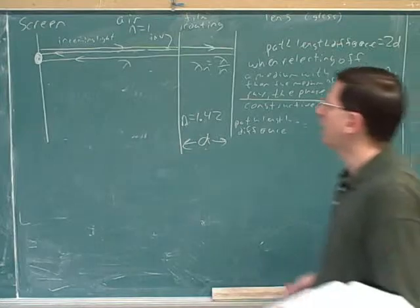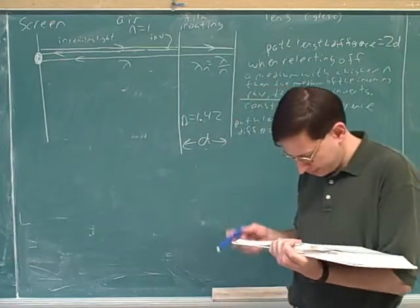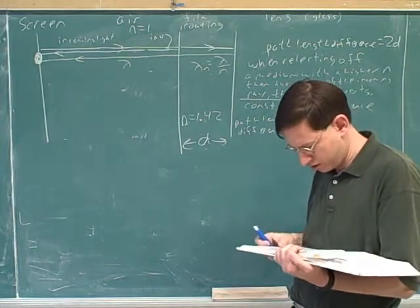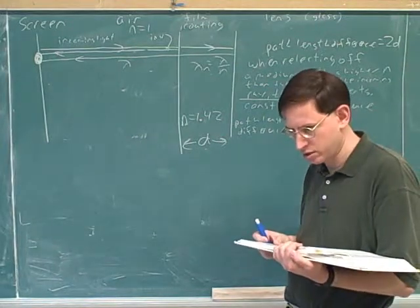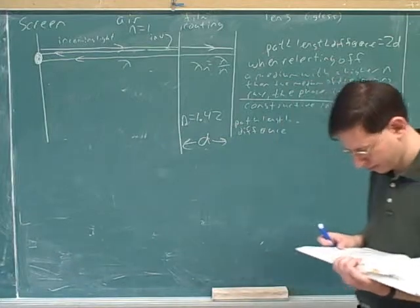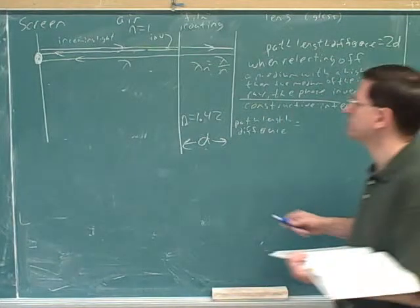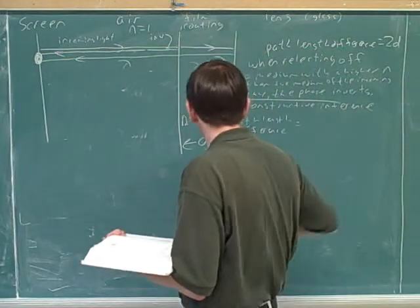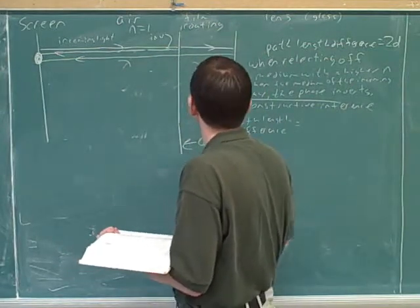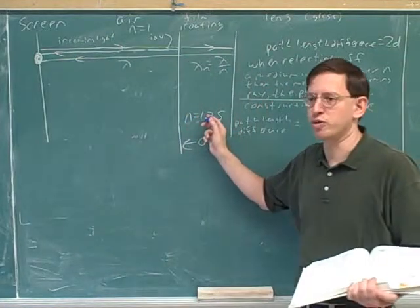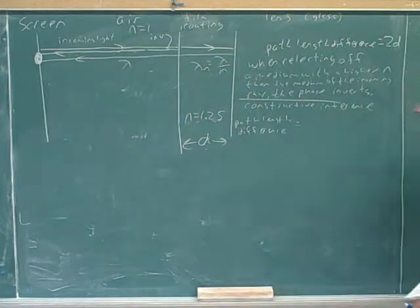And we're going to have to figure out what path length difference will give us constructive interference. But we're going to need to know our n's here. What was the n for the air? That's one. What's the n for the coating? The n for the coating is 1.25. That information was given to us. Good. And it's always good in our picture to actually write the n's in the appropriate places. So that helps us think through this a bit.